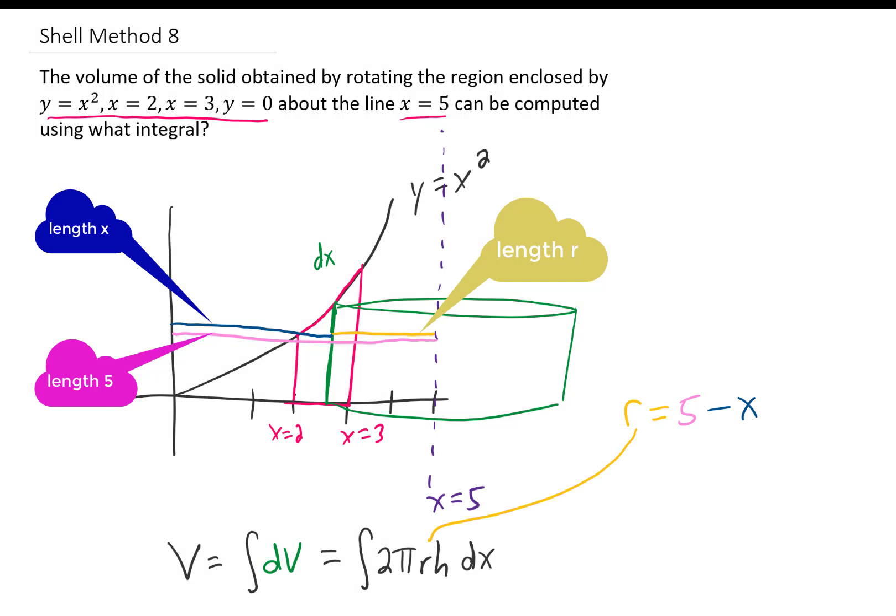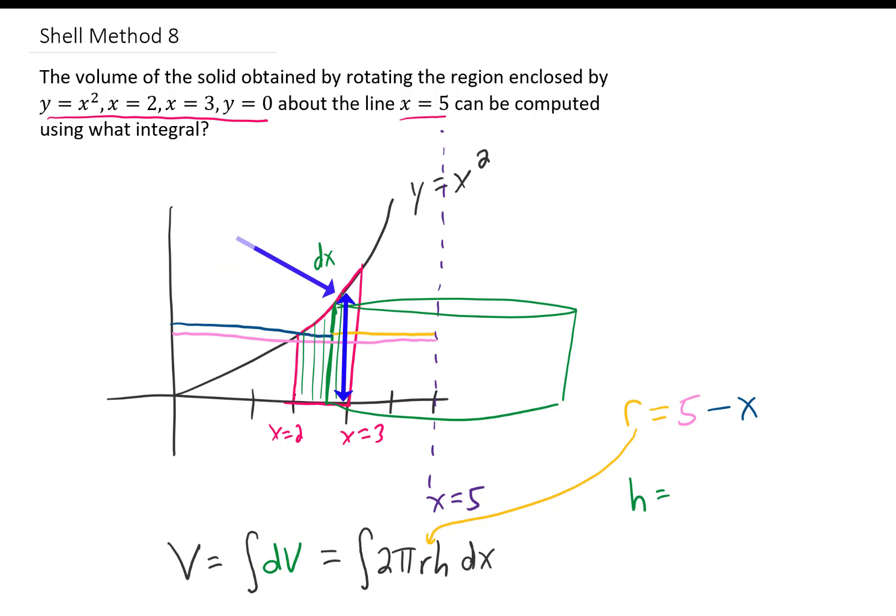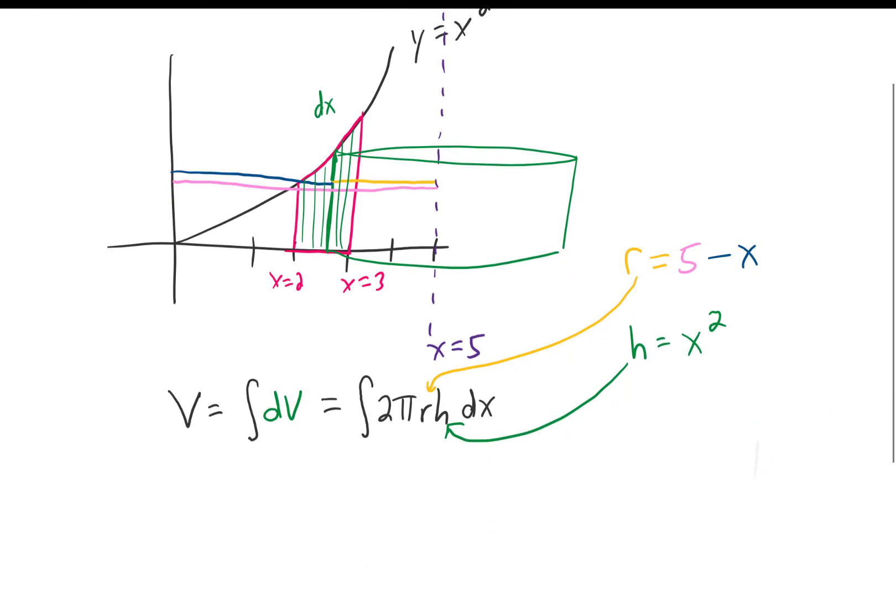The height is a little bit easier. No matter where we choose our x, our height is going to be given by the function x squared. So our height is just x squared. We'll plug that into the integral right here, and let's see what happens.